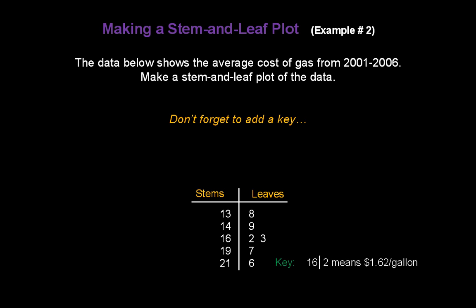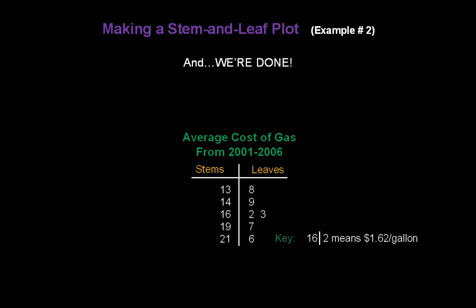Don't forget to add a key. This is really critical for the money problems because people would not know how to read these numbers without a key. 16 vertical bar 2 means $1.62 per gallon. And don't forget to add a title: the average cost of gas from 2001 through 2006. And that's it. We're done.